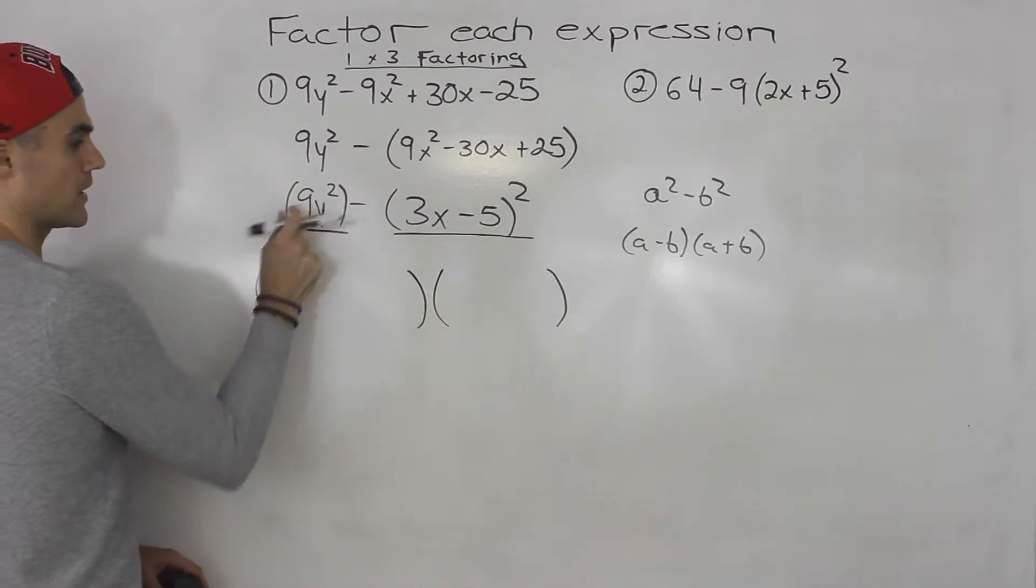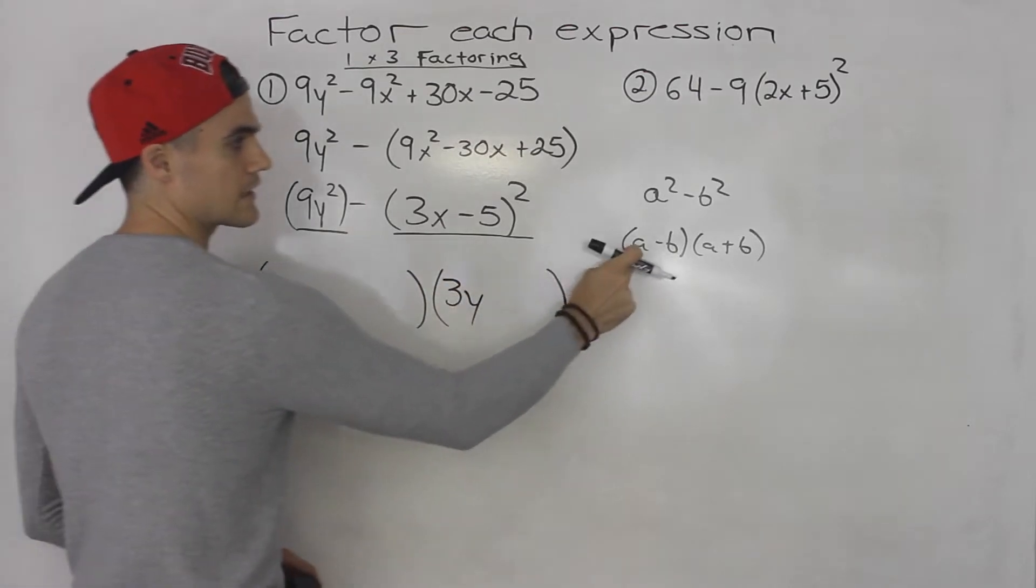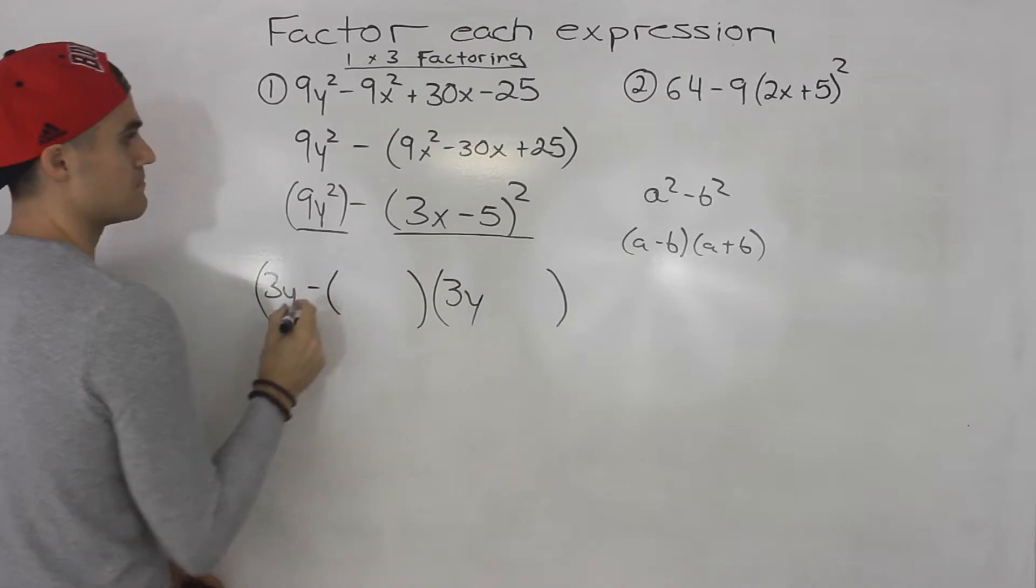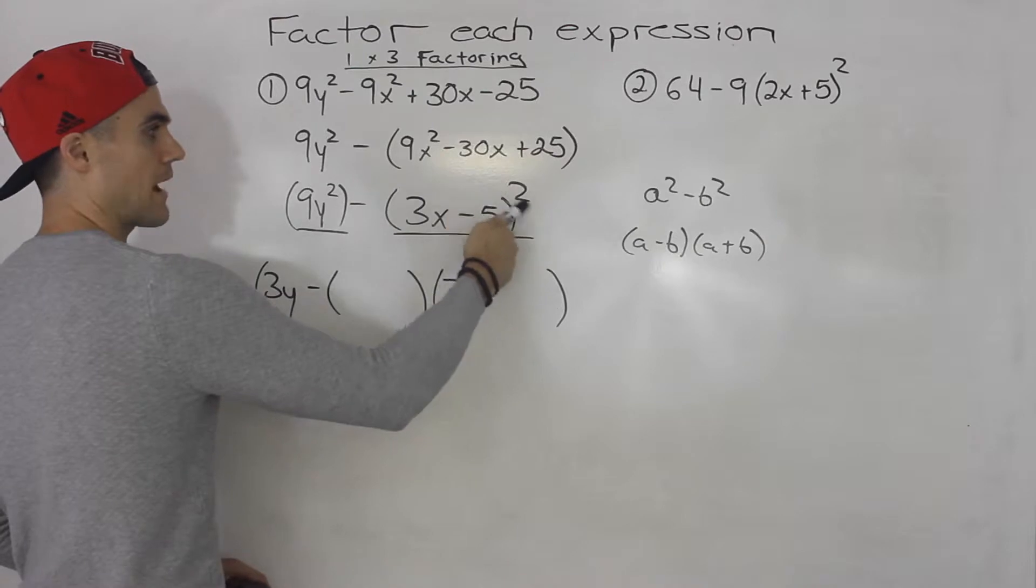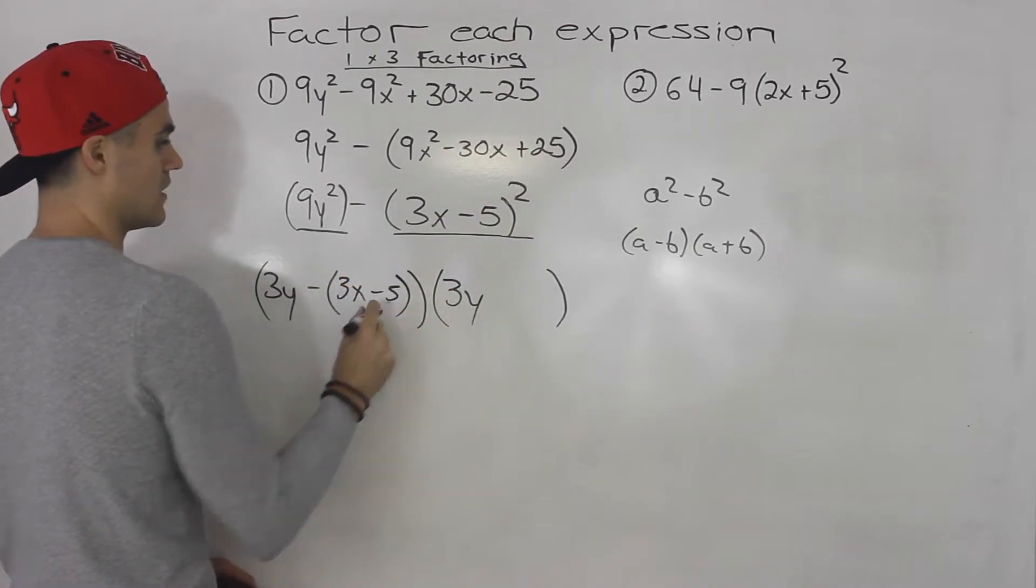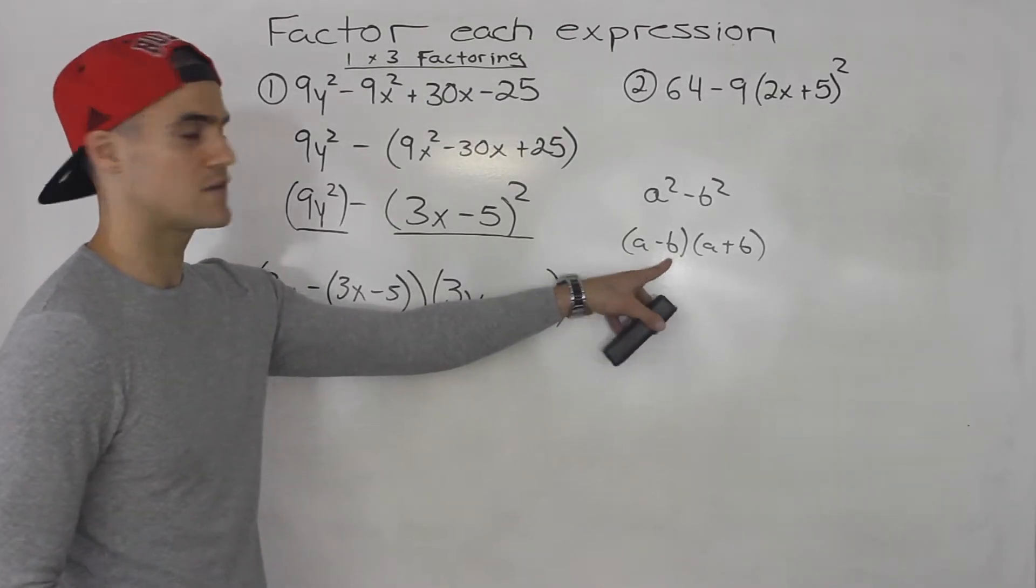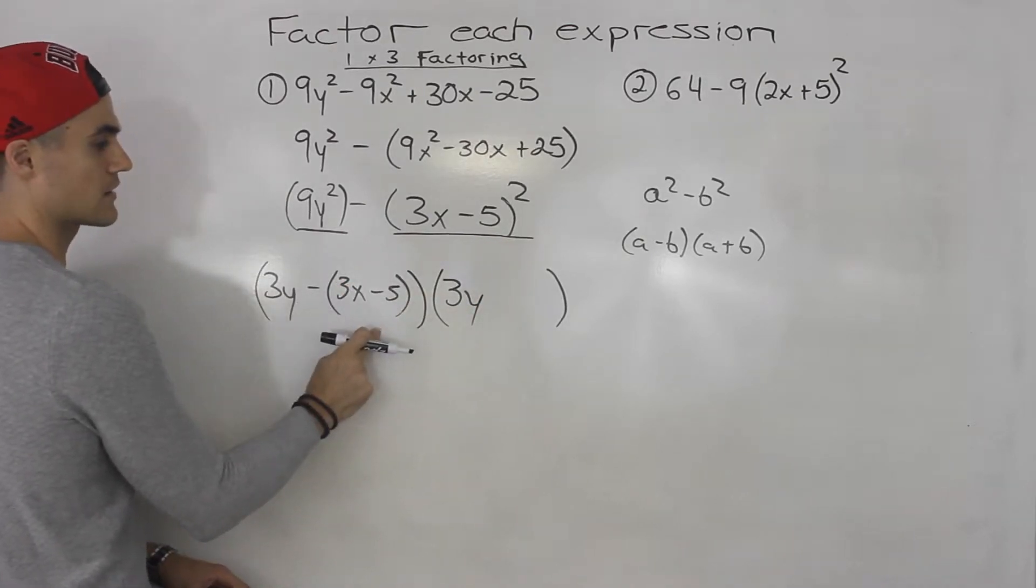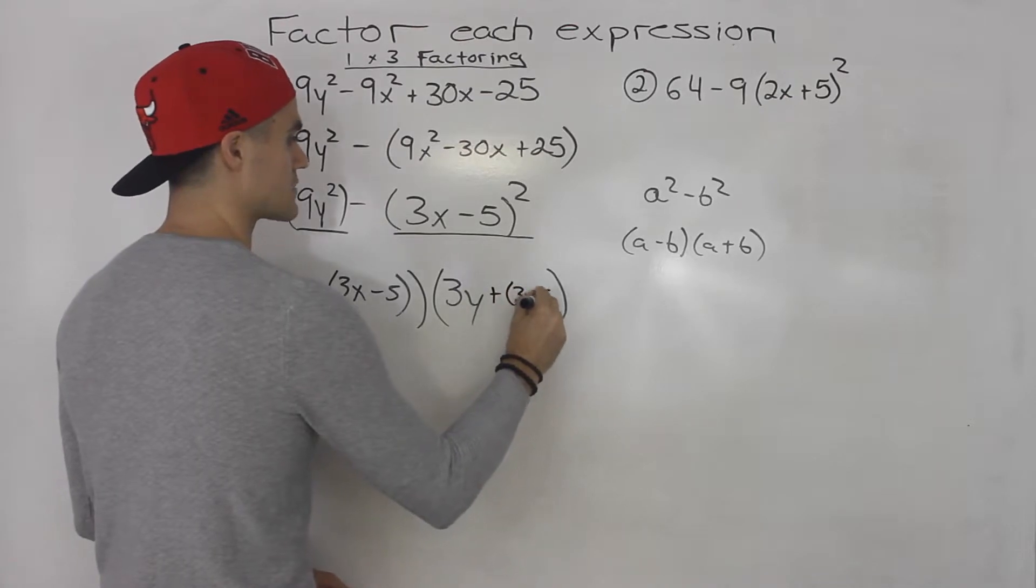So the square root of 9y² is just 3y. That's going to be like the a there. And then we're going to be subtracting the b. What's the square root of 3x minus 5 squared? Well, just this power of 2 would go away, and we'd be left with 3x minus 5. But that 3x minus 5 has to go in brackets. You're subtracting that b value, and this whole thing is that b value, so you got to put it in brackets. And then plus bracket 3x minus 5.